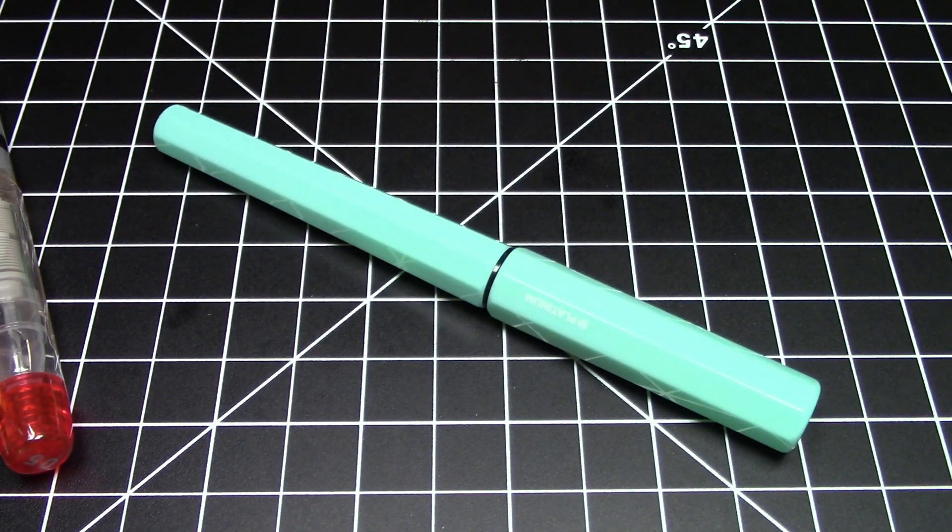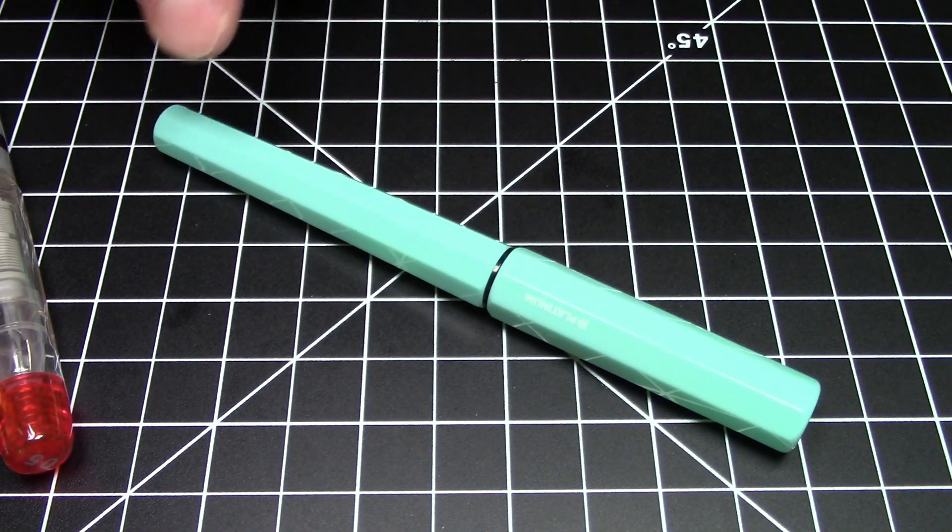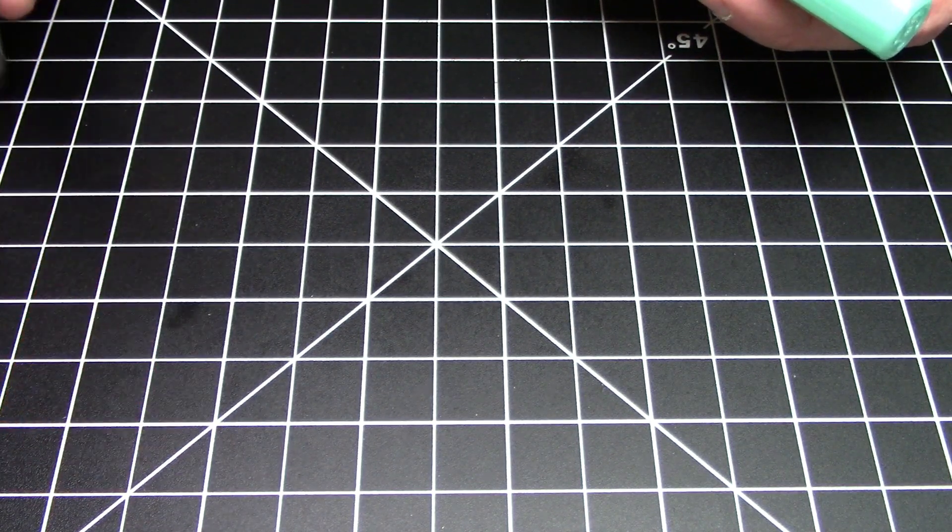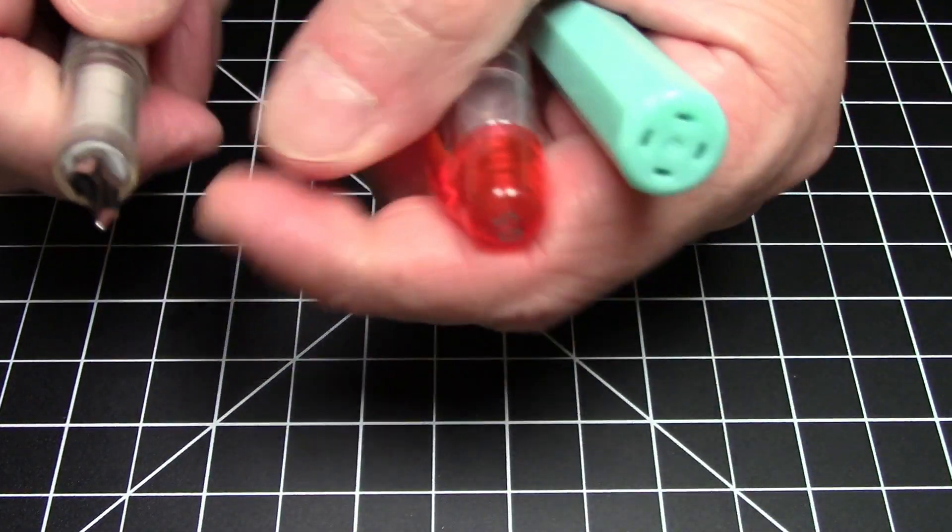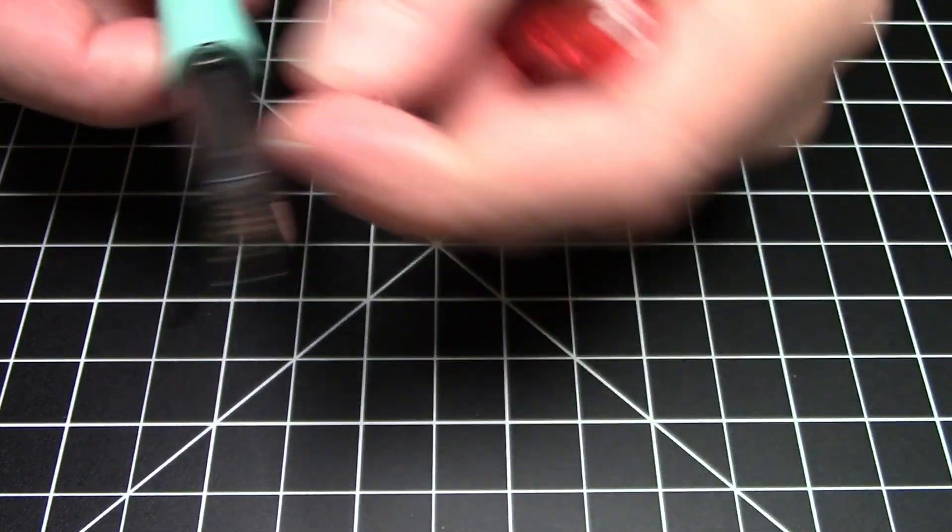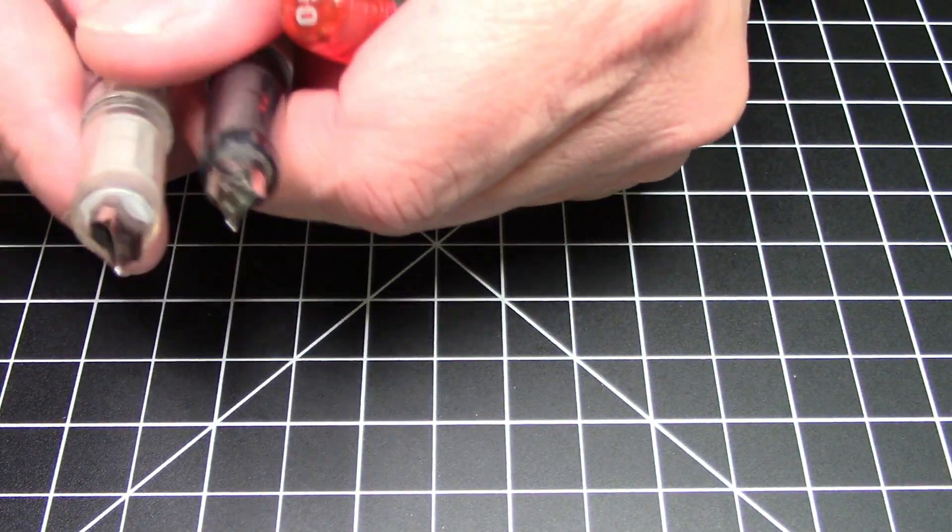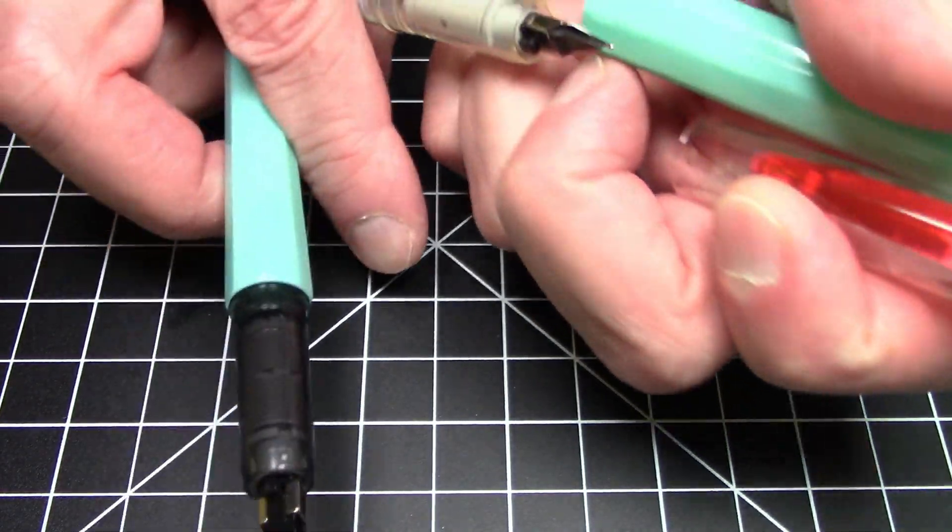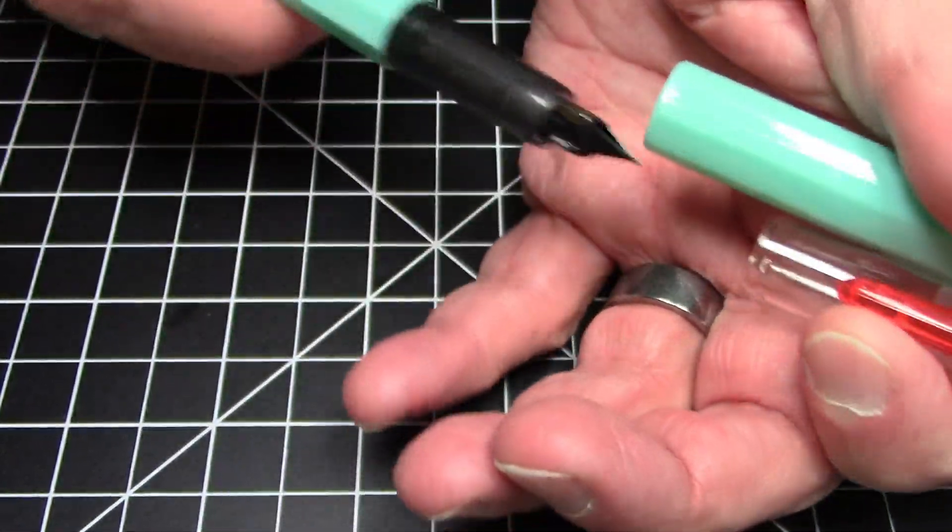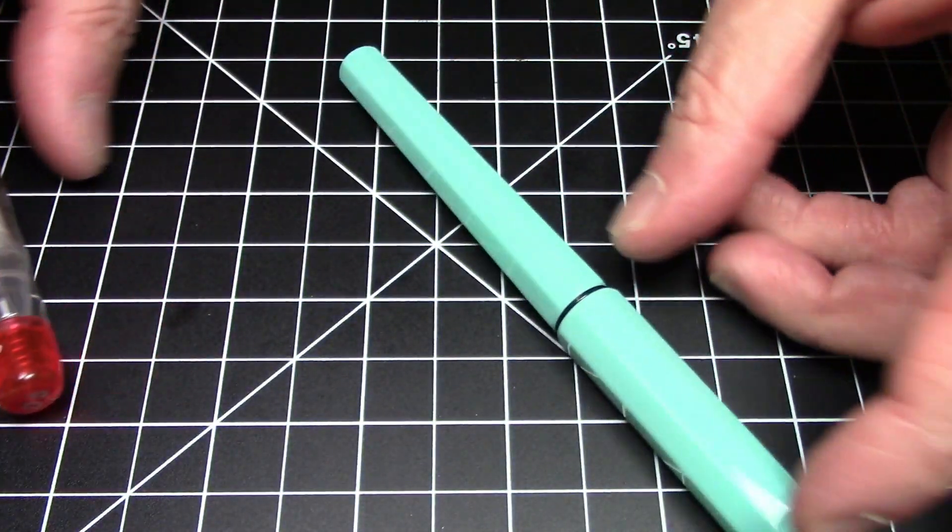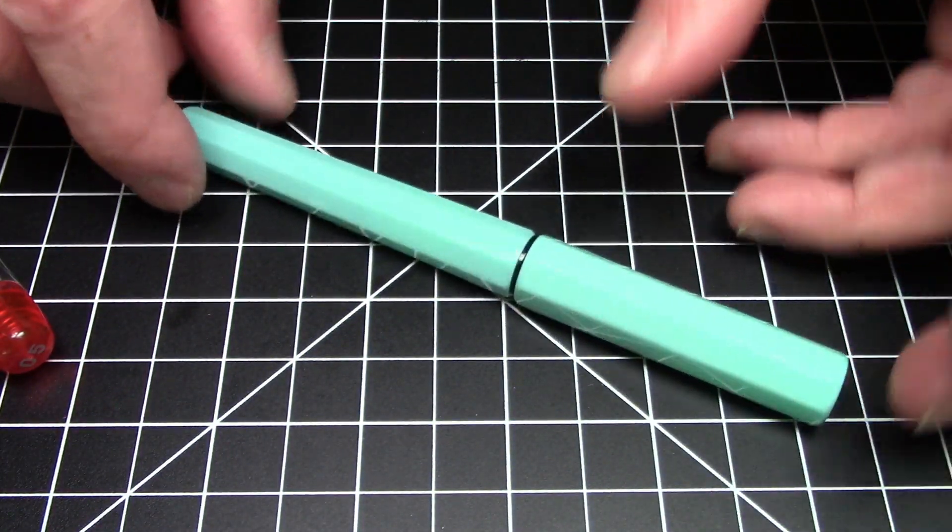If you want one of the broader nibs, like for example, this platinum preppy is a 0.5 millimeter. This is a 0.3 on the little shooting star. If you want to just swap and put a wider nib in, no problem, no problem there at all. So you do have that going for you, which is pretty nice.